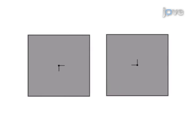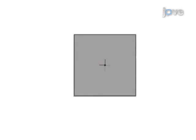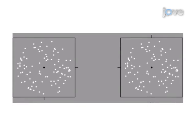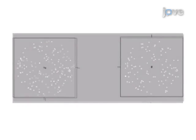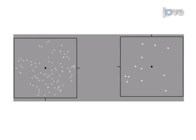Next, ensure that the images shown separately to each eye through the goggle apparatus are correctly aligned so that they are perceived as superimposed by the observer. The observer then completes a series of trials during which they judge the direction of groups of moving dots presented separately to each eye. This provides a measure of interocular suppression.